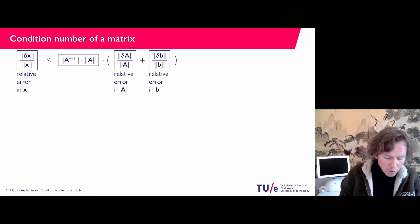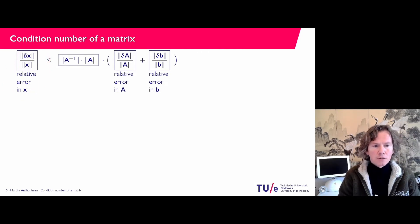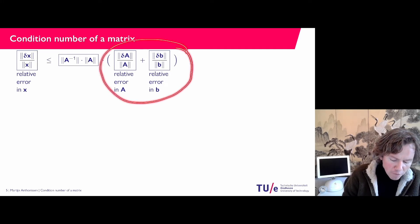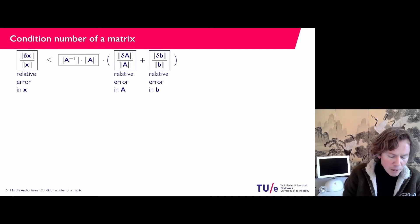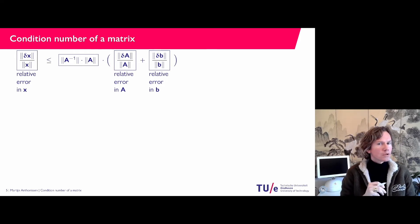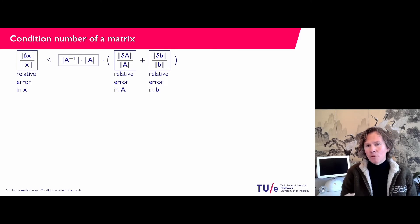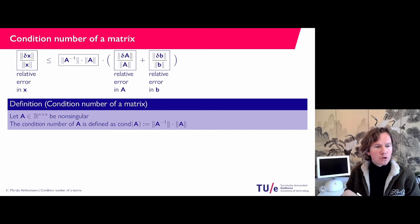On the left of the inequality we have the relative error in the solution, the relative error in x. Then inside the brackets, the first term is the relative error in our matrix, and the second term is the relative error in the right-hand side vector. Apparently both of these are being multiplied with the norm of A inverse times the norm of A. That number tells us how errors in the matrix or in the right-hand side end up in the solution — with which multiplier they appear in the error of the solution.